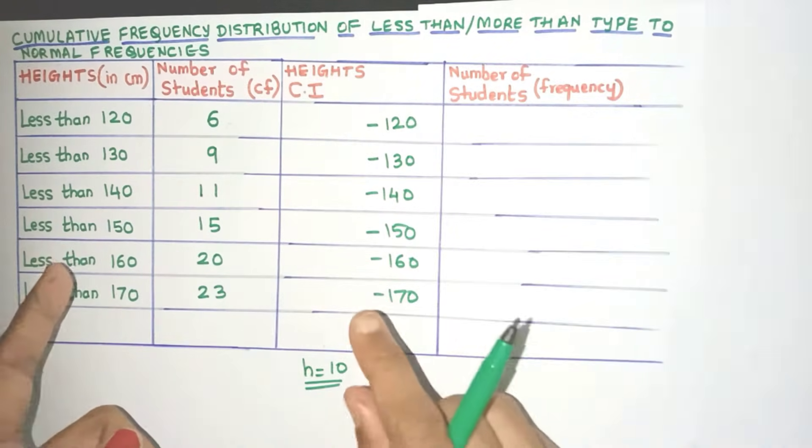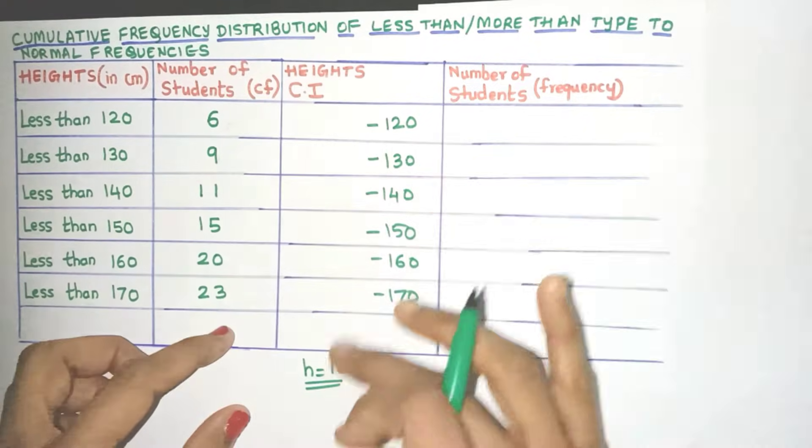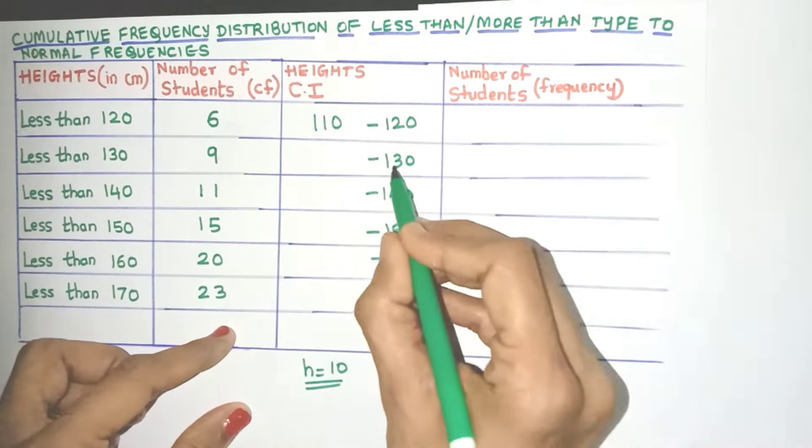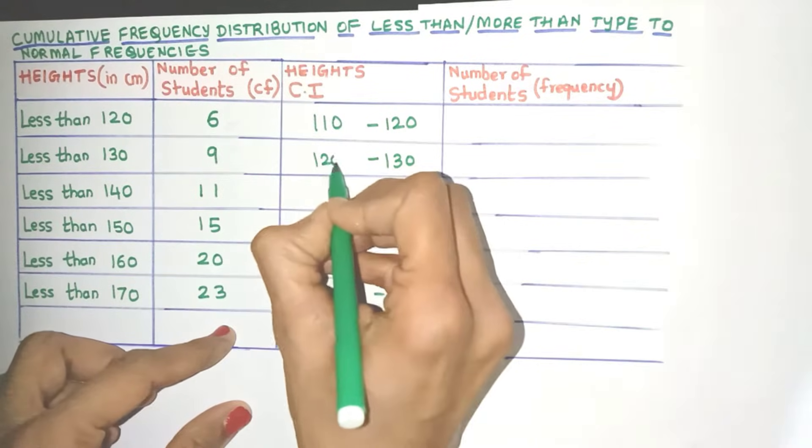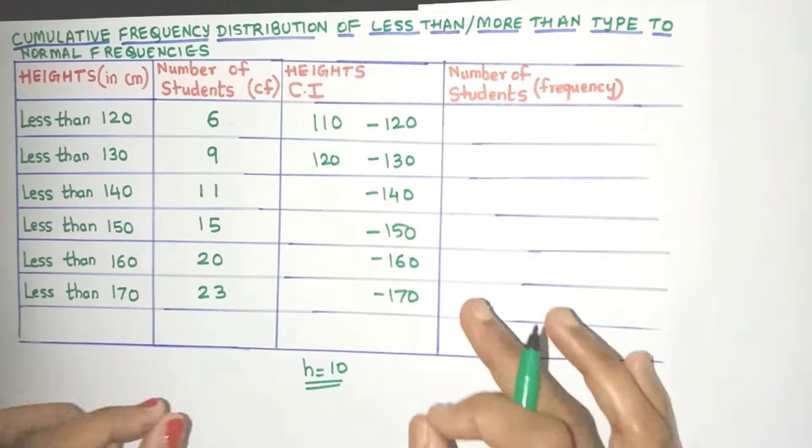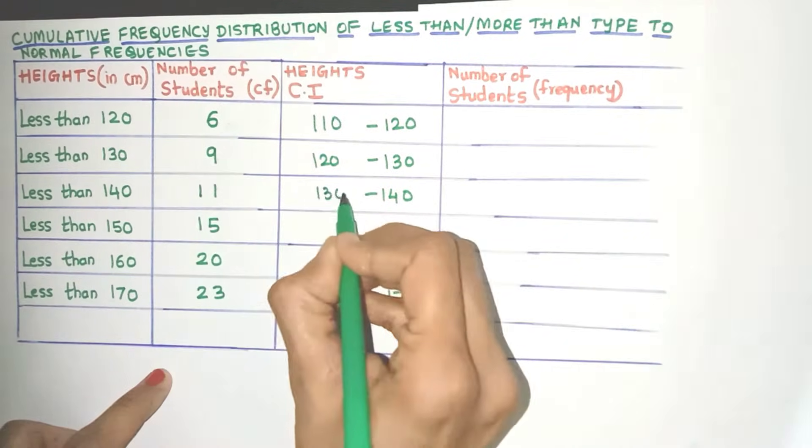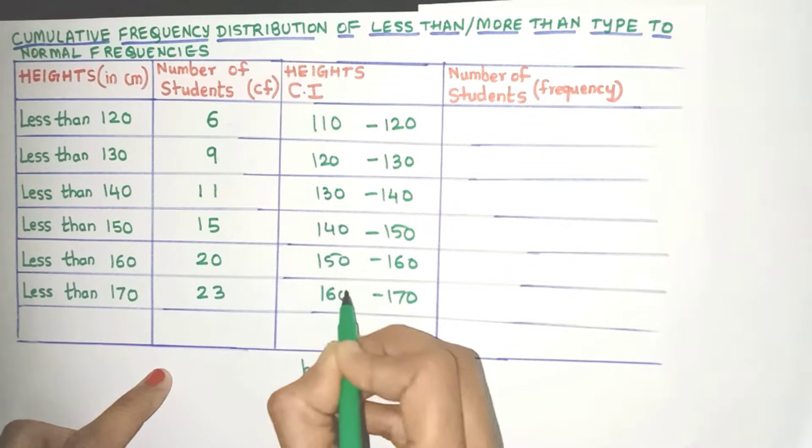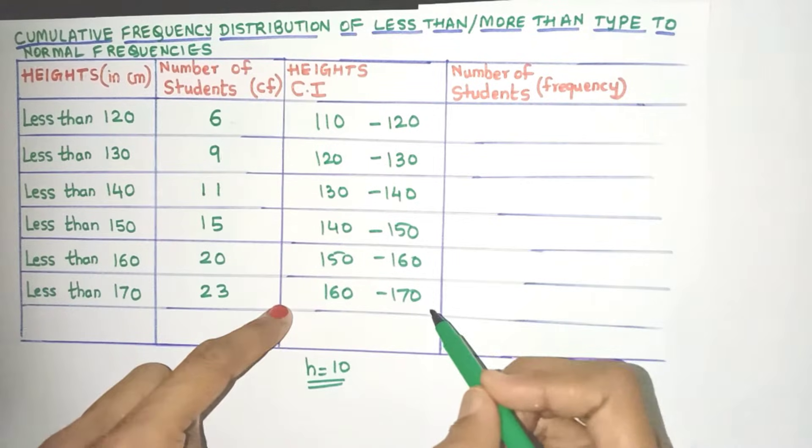So we have got the class size. We know the upper limit. Can we find the lower limit? Yes. We just need to subtract. So 120 minus 10, 110. See 130 minus 10, 120. So we can easily get all the lower class limits. So let's quickly find them out. Okay. So we've got all the class intervals.